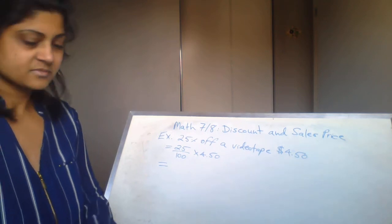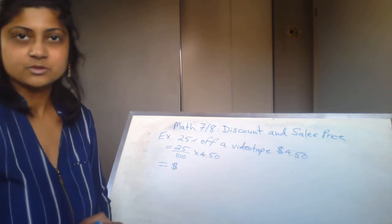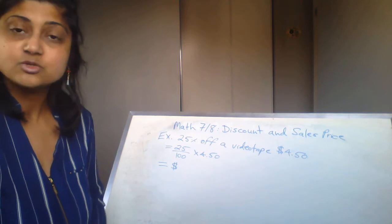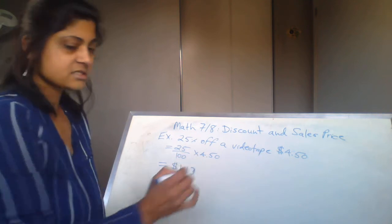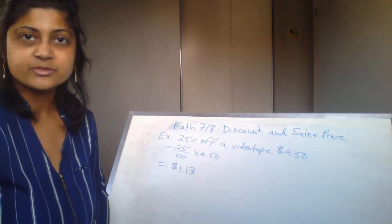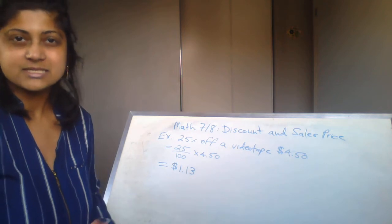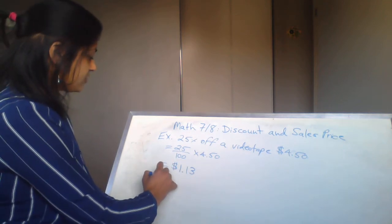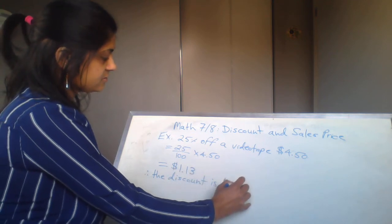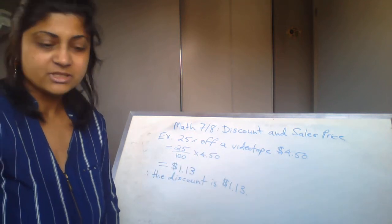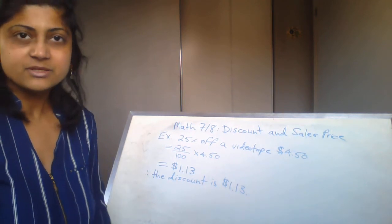So we'll do 0.25 times 4.50. If you get a decimal, we're getting 1.125 — I want to round that to two decimal places, so we get $1.13. That's the discount, rounded to two decimal places, like dollars and cents. Therefore, the discount is $1.13. These are very simple calculations, but you should still know how to do them even if you want to use a calculator.